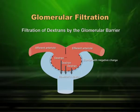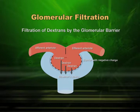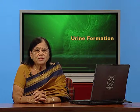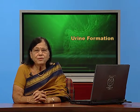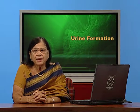The glomerulus capillary network is made by the afferent and efferent arteries — both are arteries. Afferent is bigger in diameter and efferent is smaller in diameter. Because of this difference in diameter, there is pressure on the blood flowing from the bigger area to the smaller area, and because of this pressure the blood is filtered.